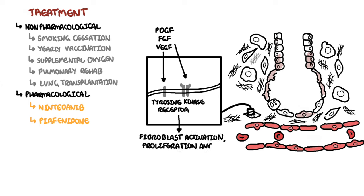Nintedanib is a tyrosine kinase inhibitor, and so it inhibits the VEGF, FGF, and PDGF pathways. Pirfenidone inhibits transforming growth factor beta, which normally stimulates collagen production. Side effects of pirfenidone include anorexia, vomiting, photosensitive rash, and liver derangement.